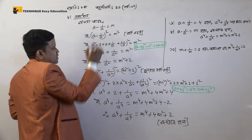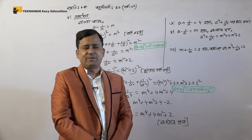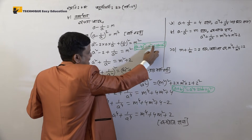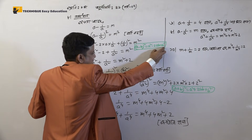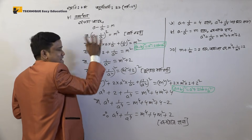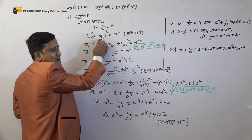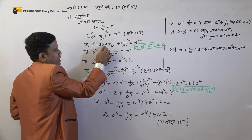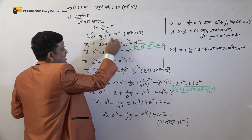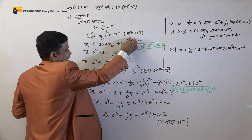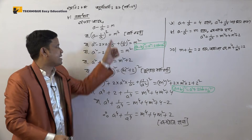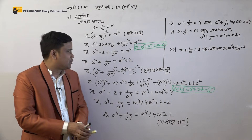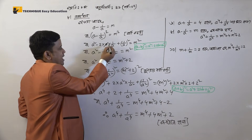A minus B whole square. A minus B whole square is equal to A squared minus 2AB plus B squared. Here A means A, and B means 1 by A. So A minus B whole square equals A squared minus 2AB, plus 1 by A whole squared, which equals M squared.